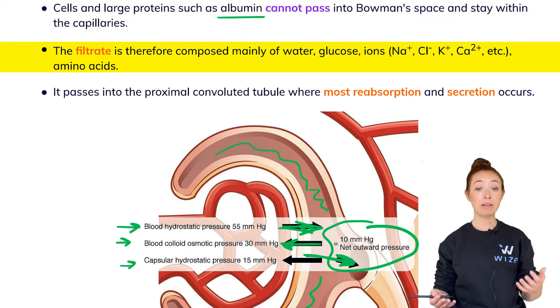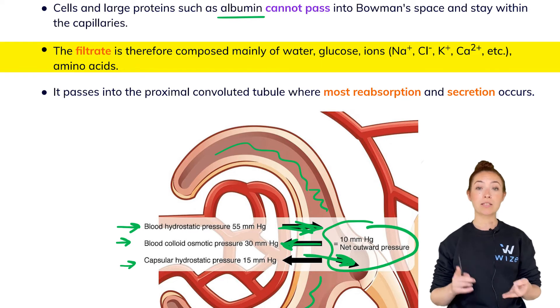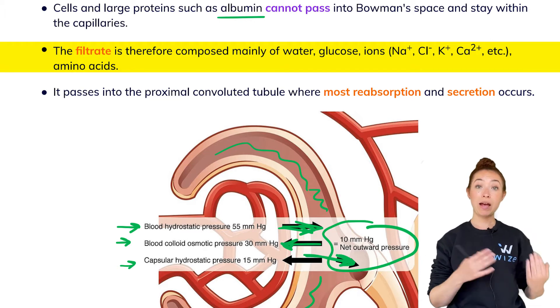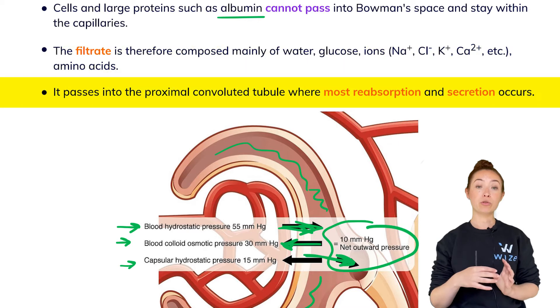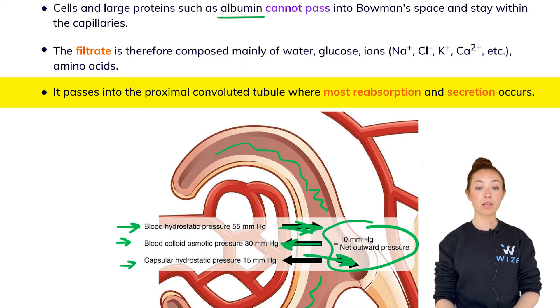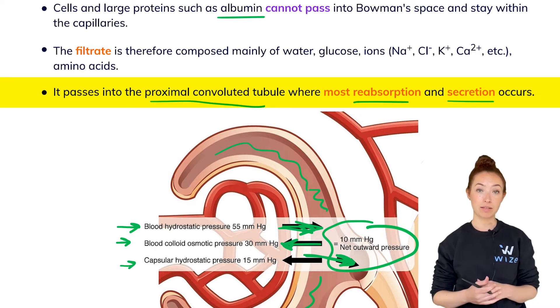Therefore the filtrate is mainly composed of water, glucose, ions, some amino acids, things like urea as well. And so after it passes from the capillaries into Bowman's space, we call that filtrate. The filtrate then exits Bowman's space and then passes into the proximal convoluted tubule where most reabsorption and secretion takes place.